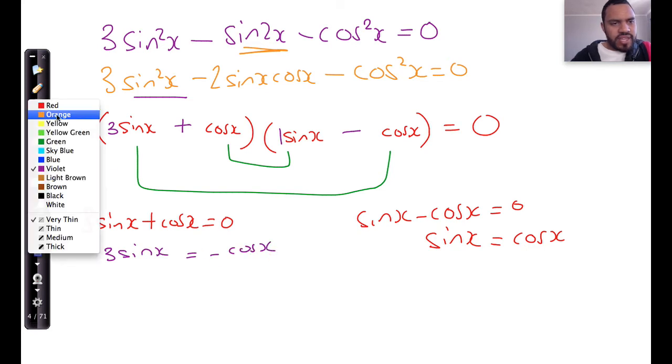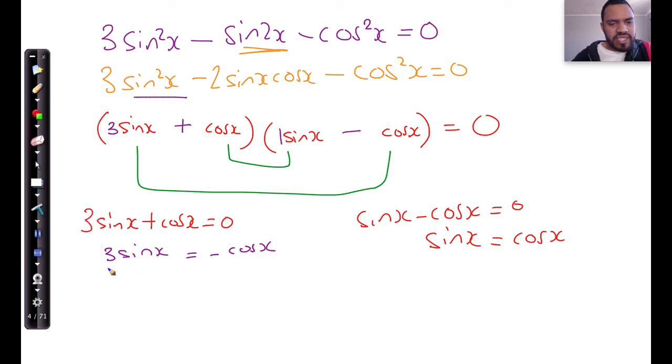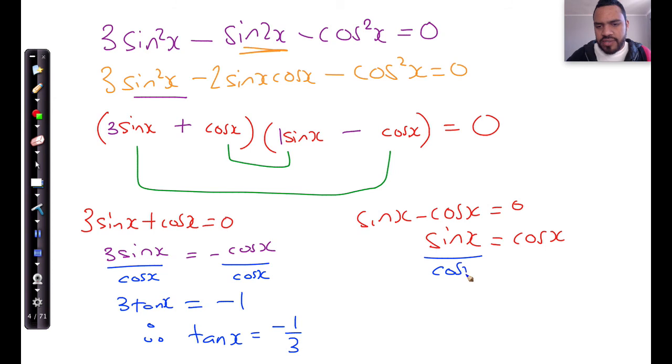Once again, at this point in time, what can you do? You can divide both sides by cos x. That's going to give you 3 times tan x, and this is going to give you minus 1, and therefore tan x is going to give you minus 1 over 3. On this side, you divide both sides by cos x, and that's going to give me tan x equals 1.